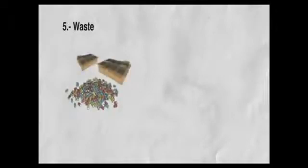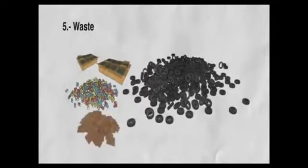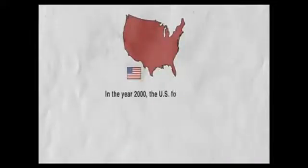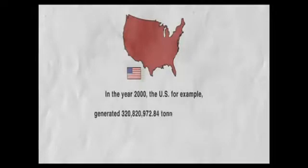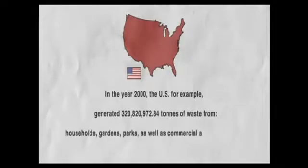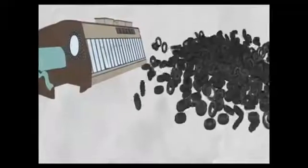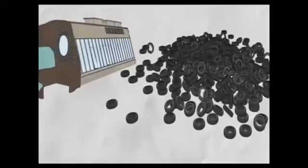Five, wastes. Everything we consume is a potential waste, because nothing is useful forever. Some materials no longer used don't degrade, occupying space and contaminating in several ways. In the year 2000, the US, for example, generated 320,820,972.84 tonnes of waste from households, gardens, parks, as well as commercial and institutional entities. Earthships use materials like tyres, that otherwise would have little or no use at all.